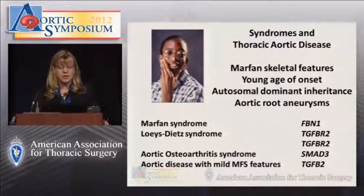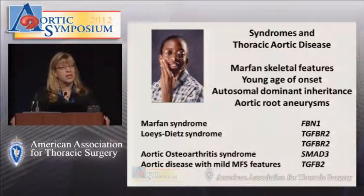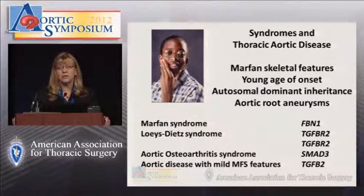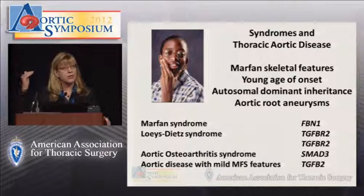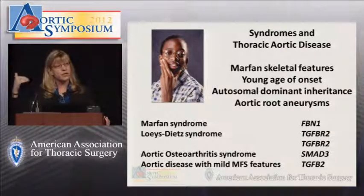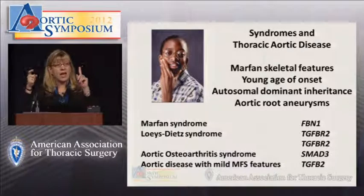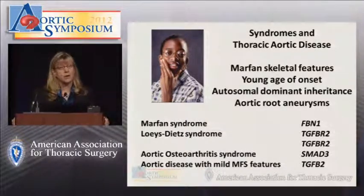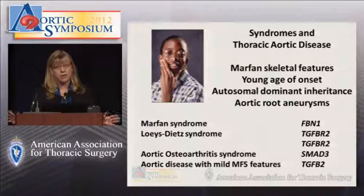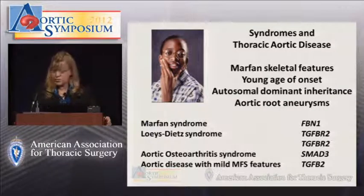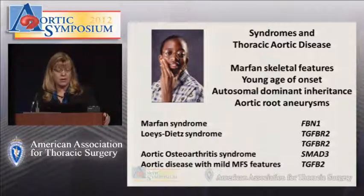When talking about syndromes and thoracic aortic disease, all the syndromes identified to date have some degree of Marfan skeletal features. These syndromes tend to present at a relatively young age, are inherited in an autosomal dominant manner — meaning passed from one generation to the next with a 50-50 risk of transmission to children — and individuals present with aneurysms at the level of the sinuses of Valsalva, the root aneurysms. Here's a list of the syndromes; I'll go through them relatively quickly.